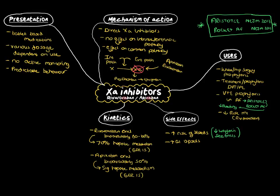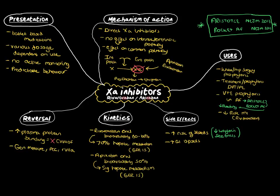When we think about the reversibility of both of these agents, first thing to note is they've both got high plasma protein binding, which means they're not amenable to CVVHDF or dialysis. When we look at the British Haematological Society guidelines, they recommend in the absence of using a direct anticoagulant reversal agent, generalised haemostatic measures, PCC, and recombinant factor VIIa.